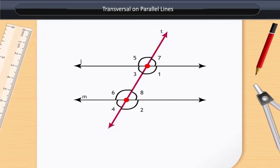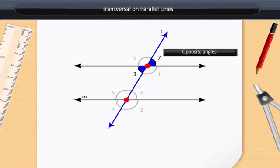When we intersect lines L and M by another line T, we get two equal angles 3 and 7. These angles are equal because these are vertically opposite angles.